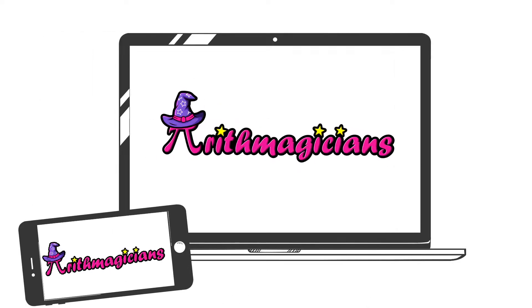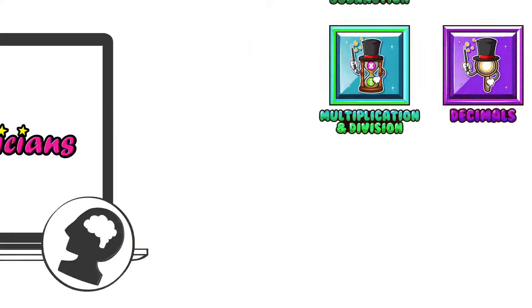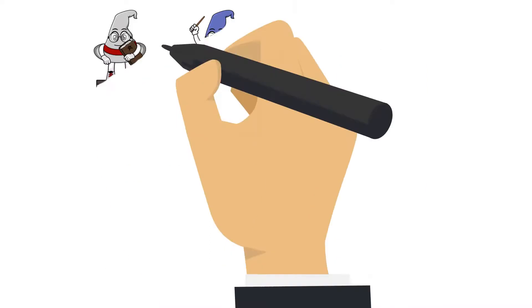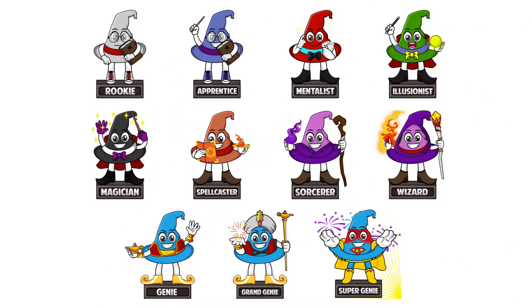Arithmagicians is a new maths game which improves pupils' mental maths fluency. Pupils learn mental strategies covering a range of topics. Based on their speed, pupils achieve an Arithmagician status, which ranges from a rookie to a super genie.